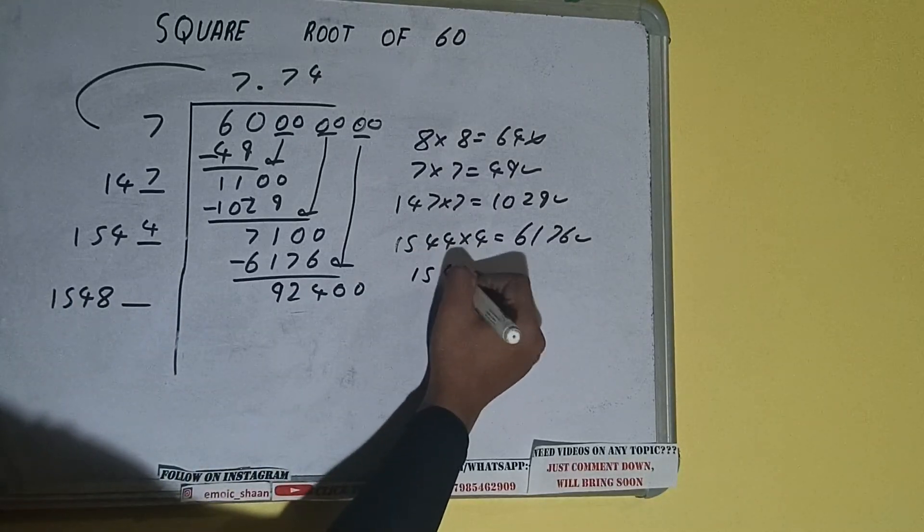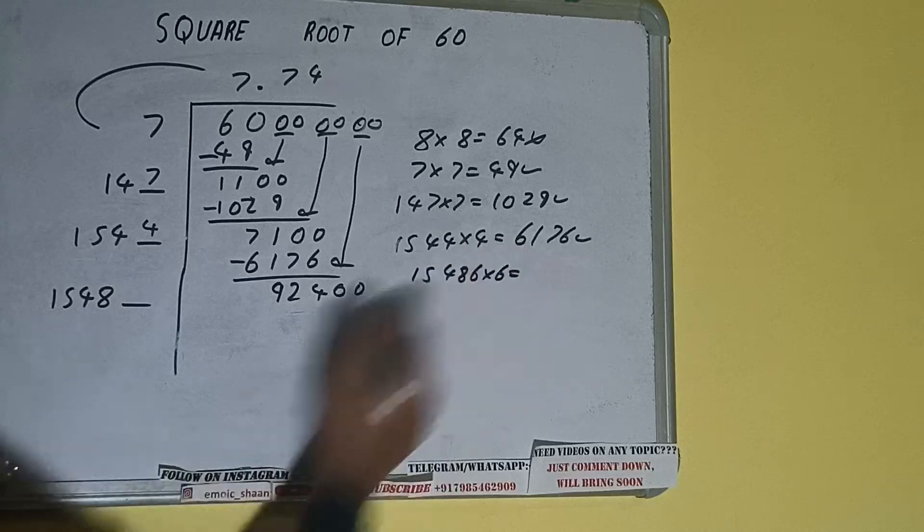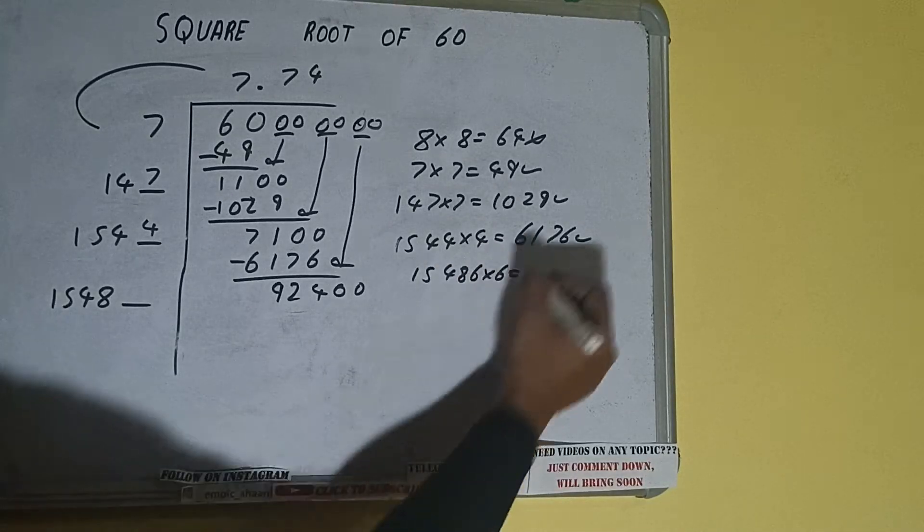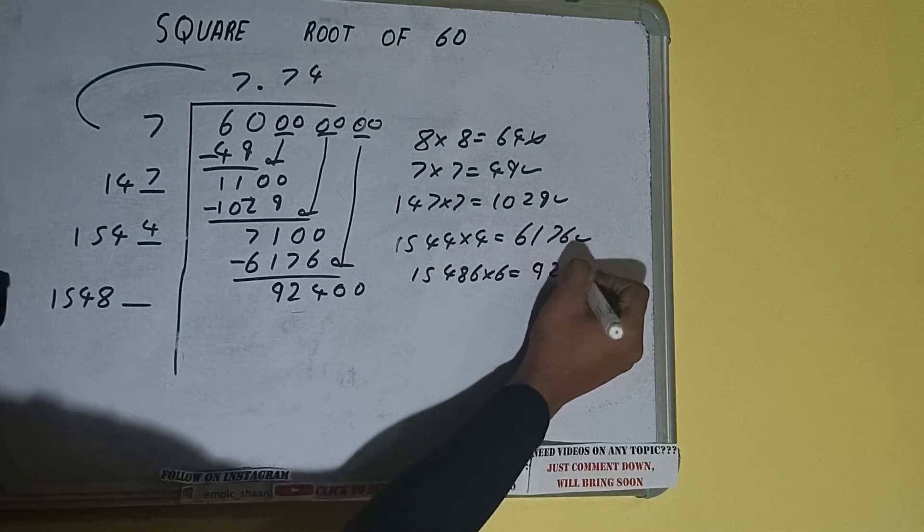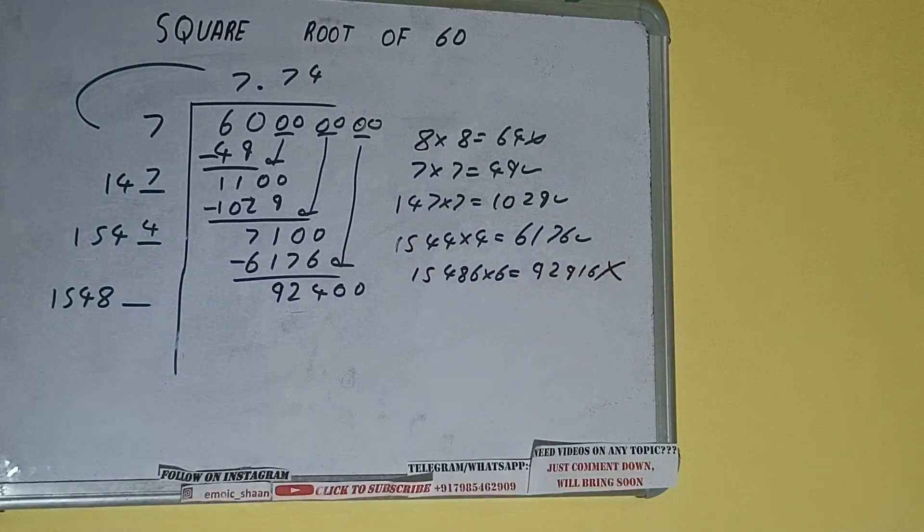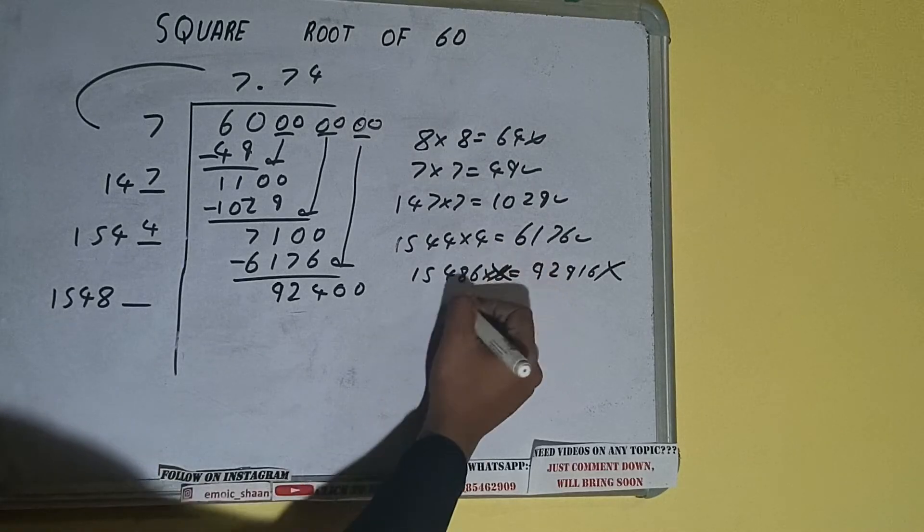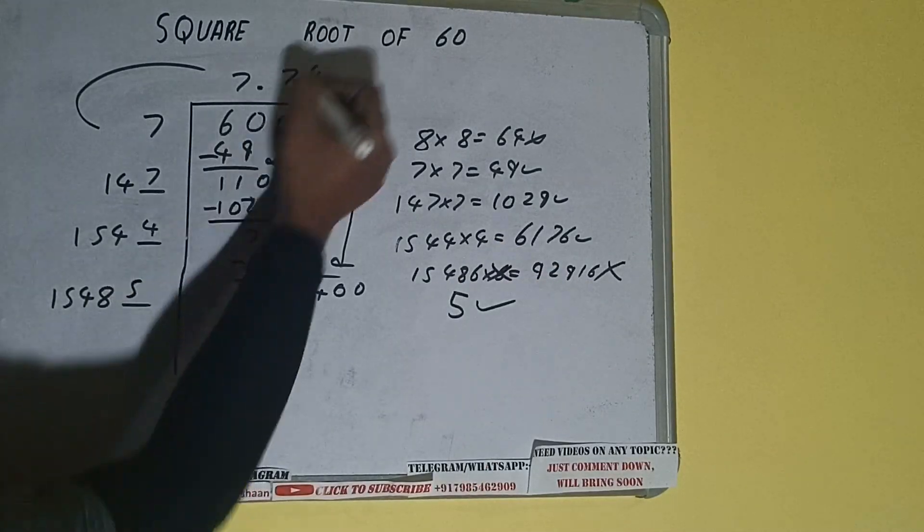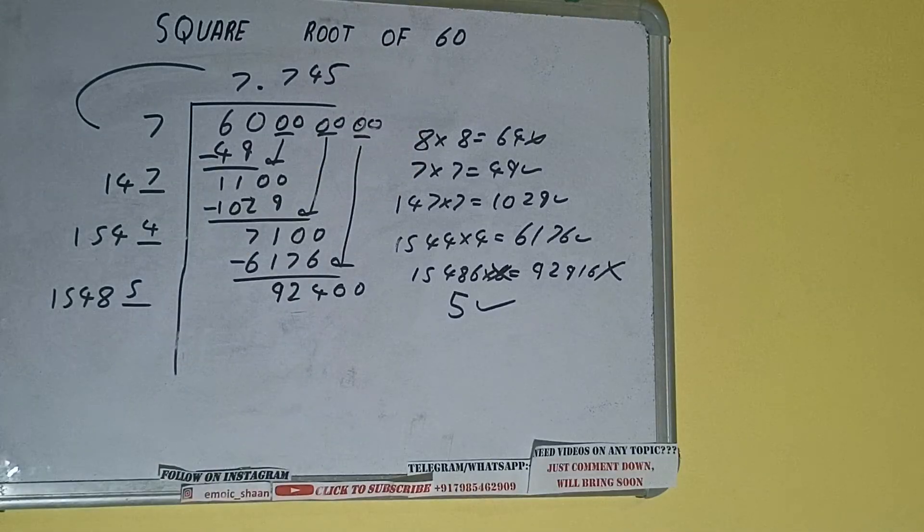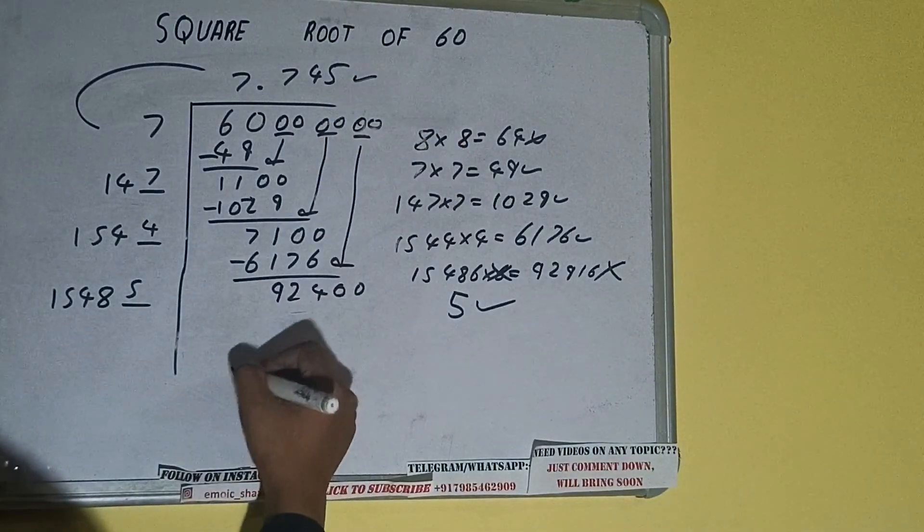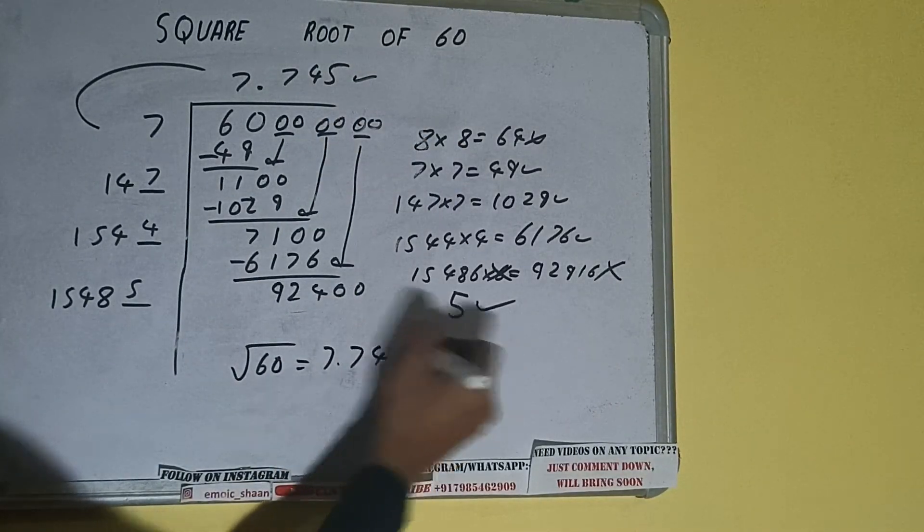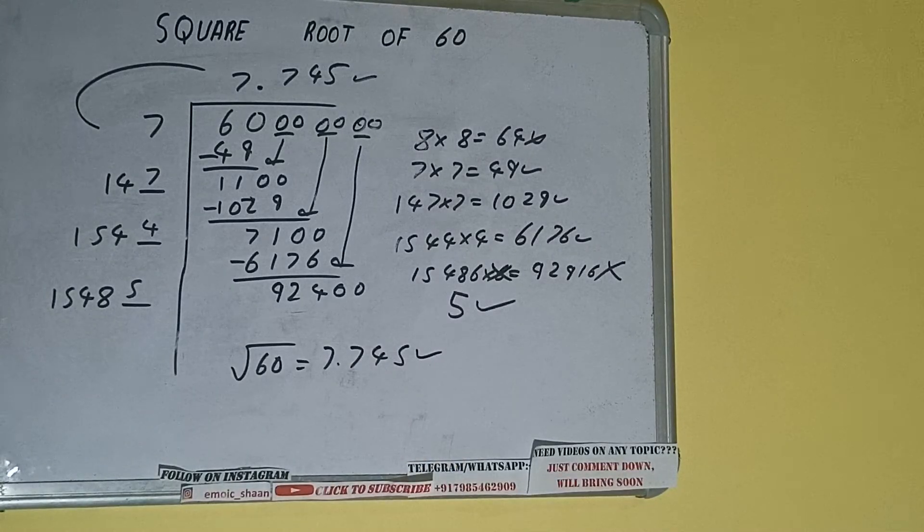1548 times 6 into 6 we can try, and we'll be having 92,916, which is bigger than this number, so we cannot take 6. But with this we can understand that 5 will surely work. So 5 here and 5 here, but we don't need to calculate because we got the answer correct up to three decimal places. So square root of 60 will be 7.745. That will be the answer.